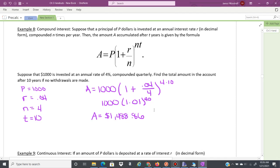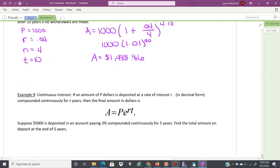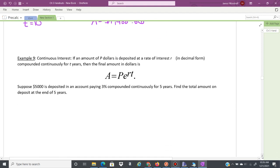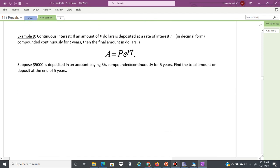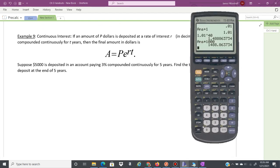So we started with $1,000, did not put any other money in there, left it there for 10 years, so we earned $488.86 in interest. The other type of interest that we have is continuous, which is compounded at any given time, and it has a special formula here. It looks like it says PERT.